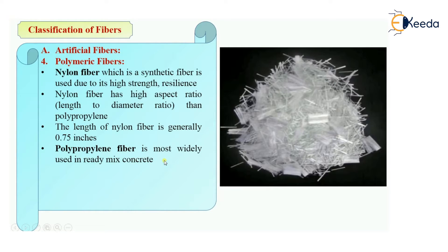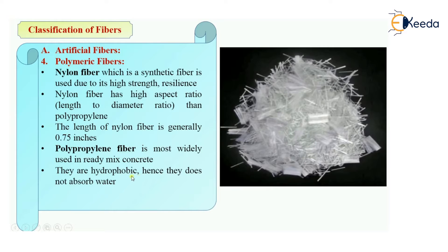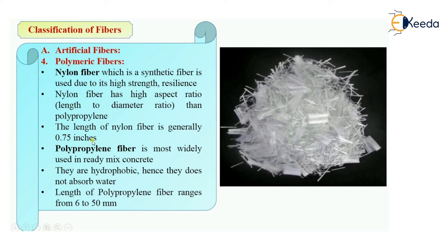In the polymeric fiber category, polypropylene fibers are the most widely used, especially in ready-mixed concrete. They are hydrophobic, meaning they do not absorb any water. This is an advantage because there will be no volume changes due to water absorption — these fibers repel water. The length of polypropylene fibers ranges from 6 mm to 50 mm, while the length of nylon fiber is 0.75 inches, which is approximately equal to 19 mm.